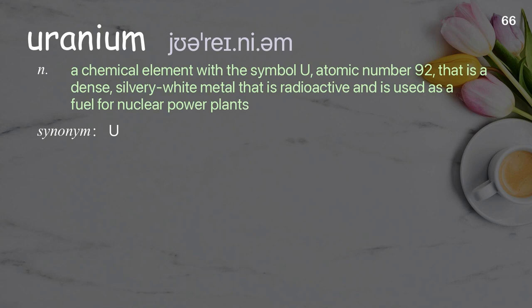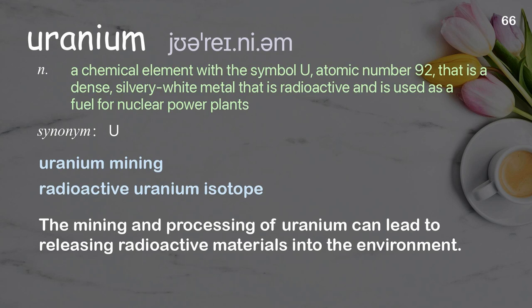Uranium: a chemical element with the symbol U, atomic number 92, that is a dense silvery-white metal that is radioactive and is used as a fuel for nuclear power plants. Examples: uranium mining, radioactive uranium isotope. The mining and processing of uranium can lead to releasing radioactive materials into the environment.